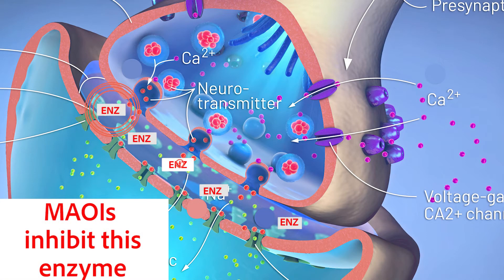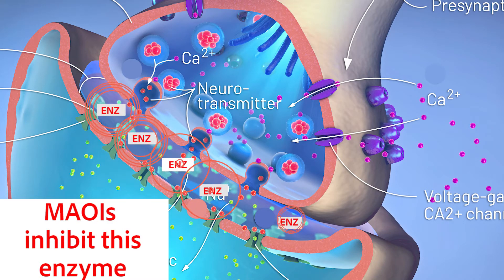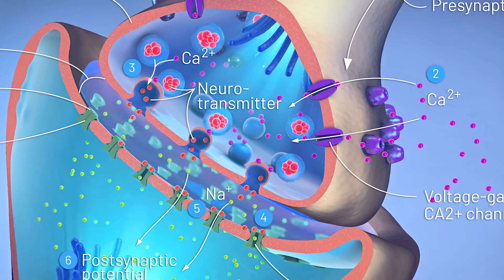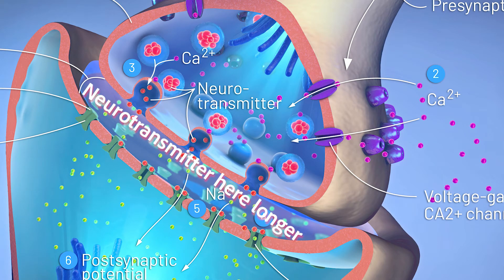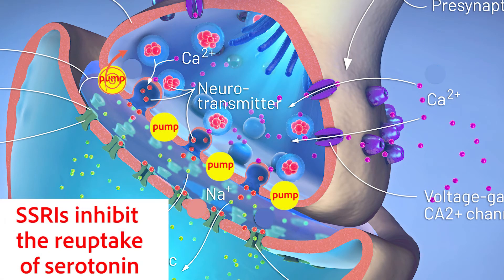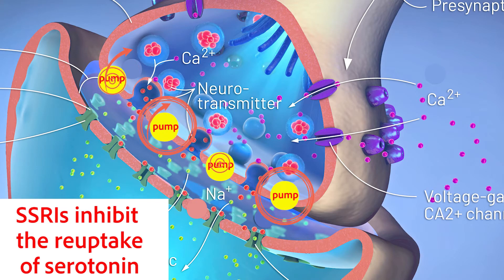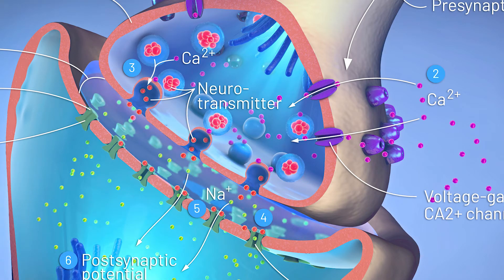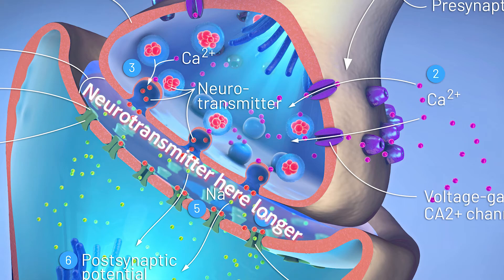We have medications called monoamine oxidase inhibitors which inhibit the enzyme in the synaptic cleft. By inhibiting the degradation of serotonin, there's an increase in the amount of serotonin binding to receptors on the second cell. We also have other antidepressants like selective serotonin reuptake inhibitors that decrease reuptake of serotonin into the first neuron, leaving more serotonin in the synaptic cleft ready to bind onto receptors of the second neuron.